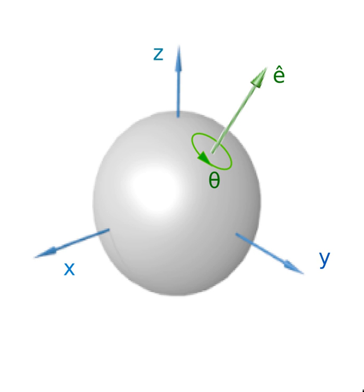Rotations about the origin have three degrees of freedom — the same as the number of dimensions. A three-dimensional rotation can be specified in a number of ways. The most usual methods are Euler angles. Any rotation about the origin can be represented as the composition of three rotations defined as the motion obtained by changing one of the Euler angles while leaving the other two constant. They constitute a mixed axes of rotation system, where the first angle moves the line of nodes around the external axis Z, the second rotates around the line of nodes, and the third is an intrinsic rotation around an axis fixed in the body that moves. This presentation is convenient only for rotations about a fixed point.